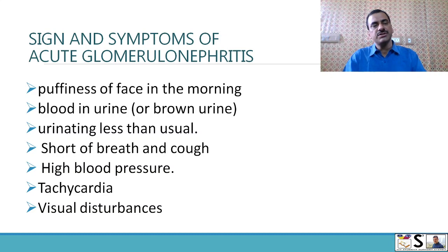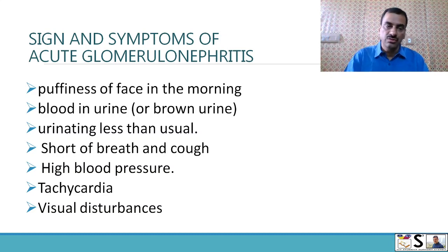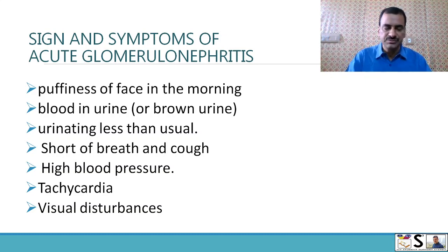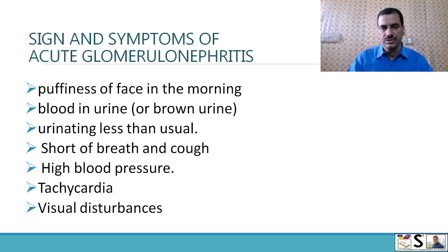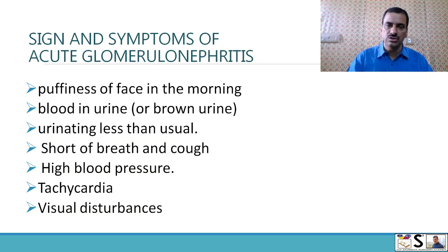What signs and symptoms appear when glomerulonephritis is present? First, puffiness of the face in the morning — swelling of the face. Blood in urine — the urine may become brownish. Urinating less than usual — reduced urination.